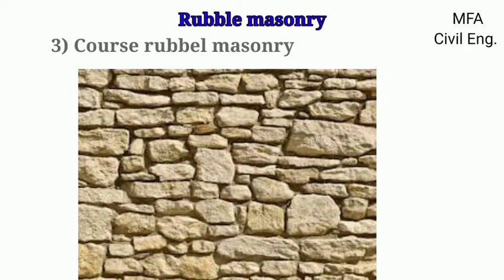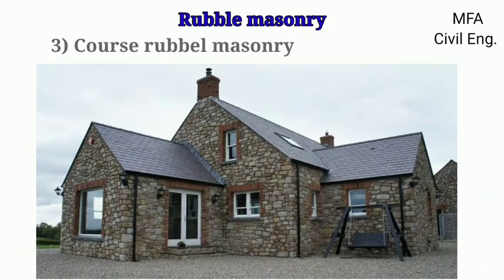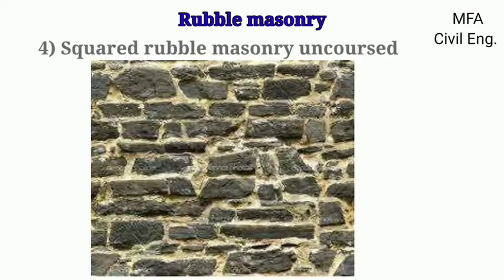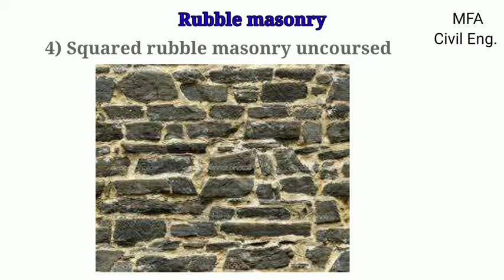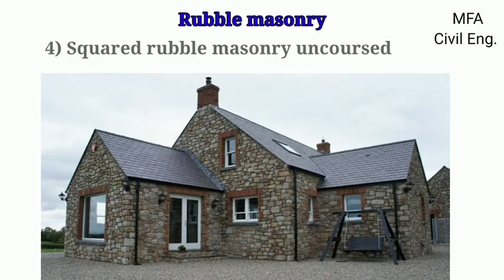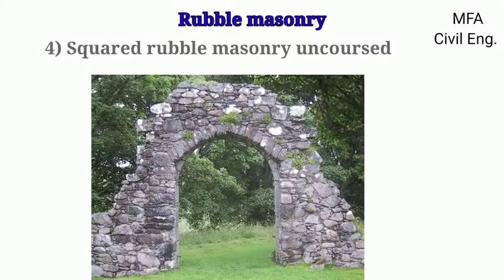Coarse rubble masonry is commonly used in building construction work where the wall height is low, like residential buildings, public buildings, piers, and the abutments of small bridges. In squared rubble masonry uncoursed, the squared stone means a stone whose edges have been made roughly straight. Squared does not mean the stones are square in section. The stones are roughly dressed and are laid at random on their natural bed so that they are interlocked. The joints should not exceed 13 mm in thickness and the voids between the stone blocks are filled with mortar and stone chips. This type of masonry is used for residential buildings, public buildings, and boundary walls.